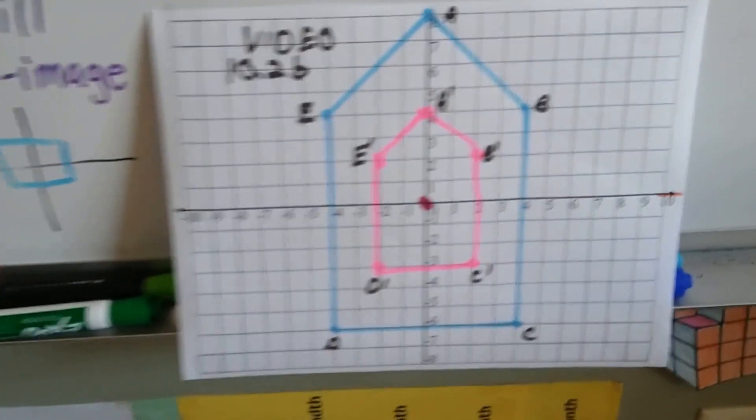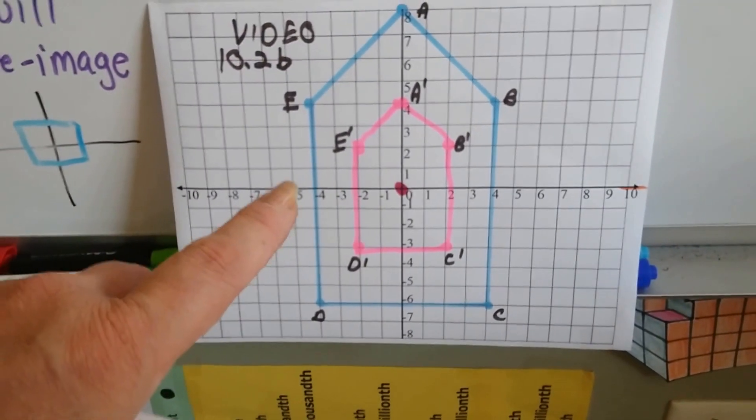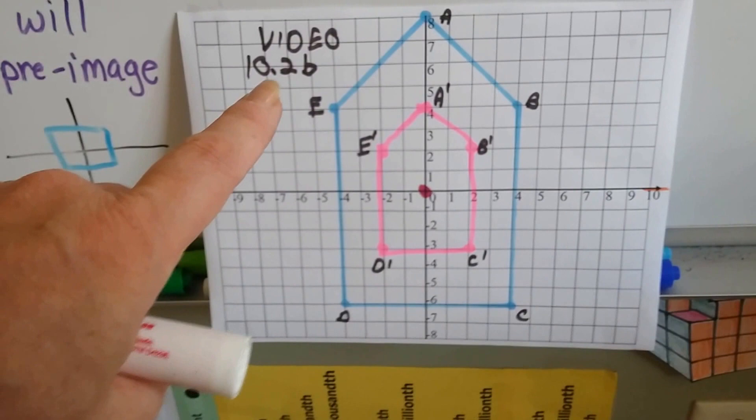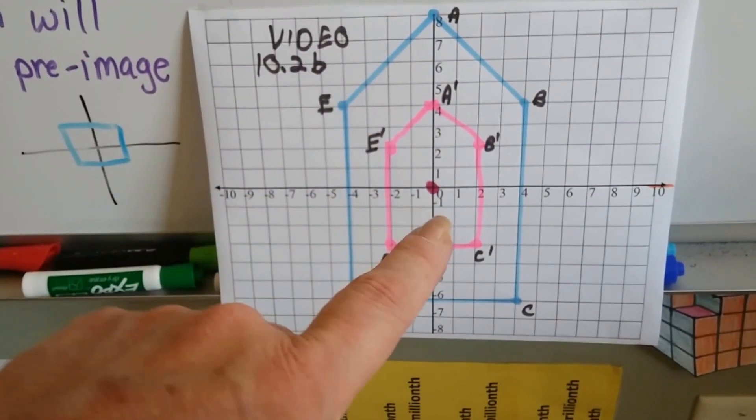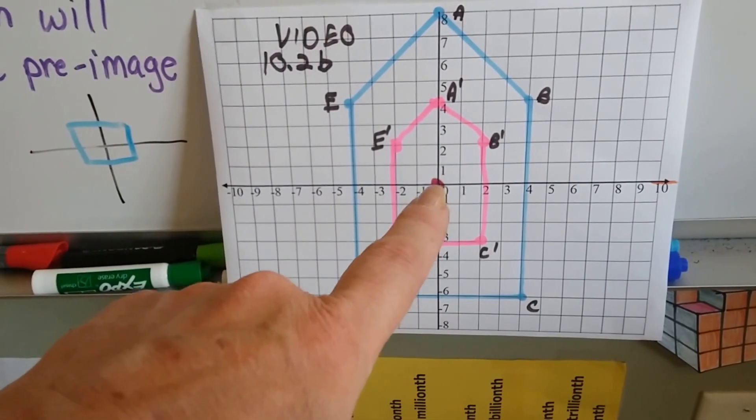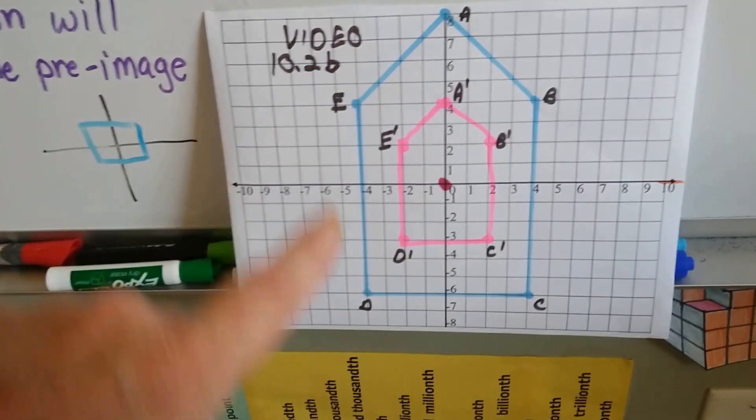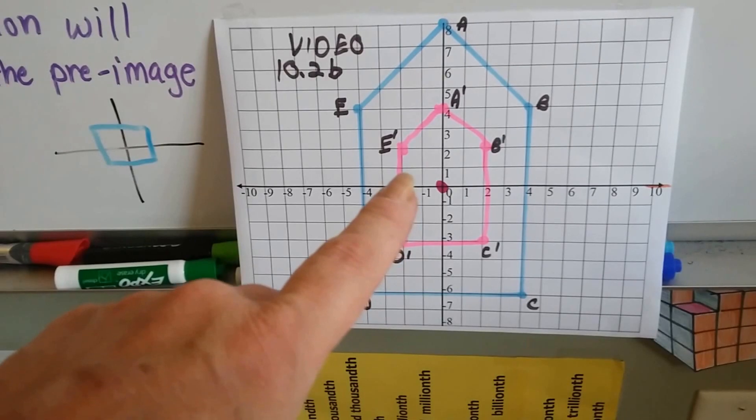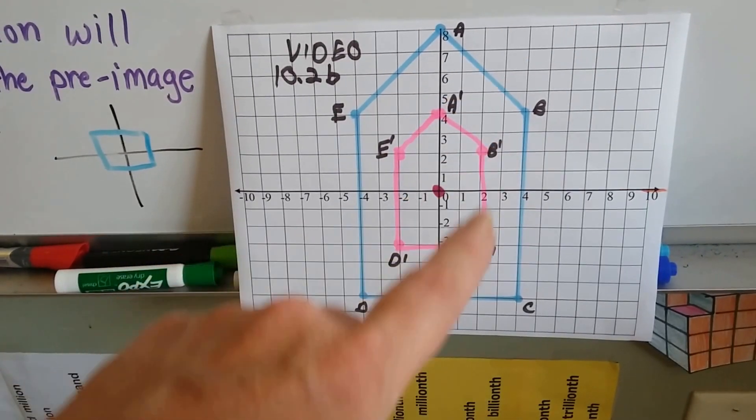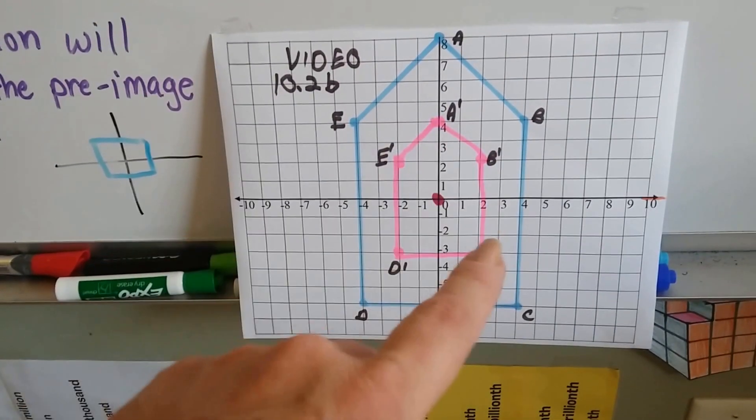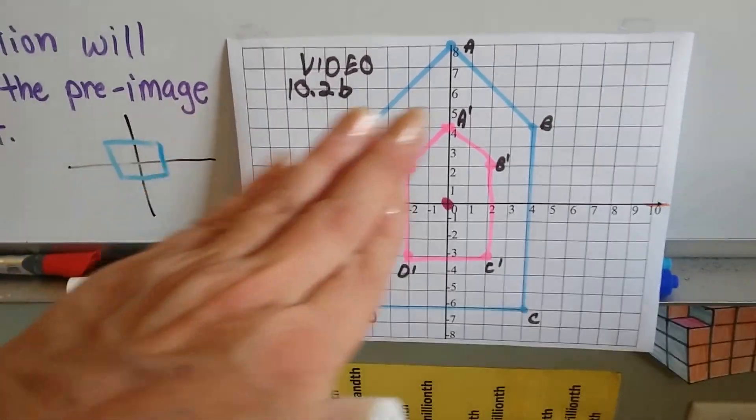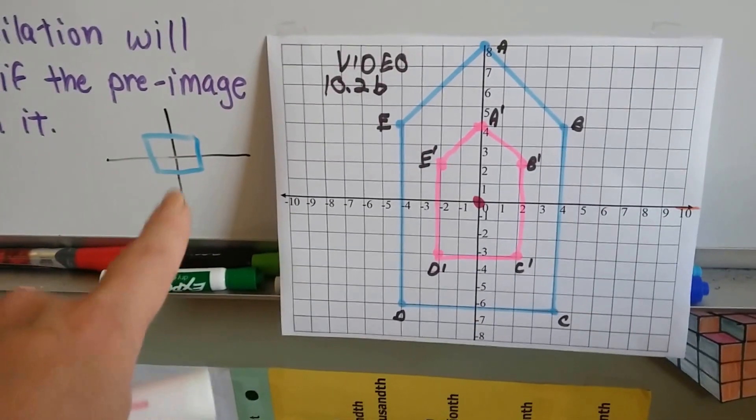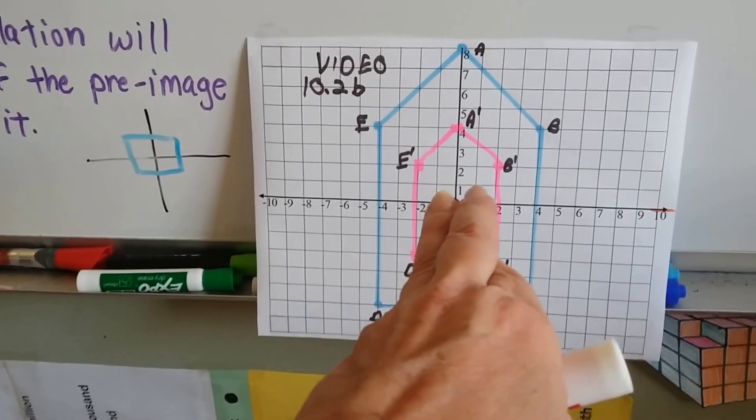Let's take a look at the drawing from the last video. This was it from video 10.2b. We can see the center of dilation is right here at (0,0). The blue house shape was our original pre-image, and the pink one was our image because you can see the tick marks. It kind of looks like a bullseye, doesn't it? It's right in the center.